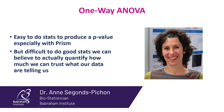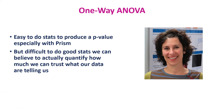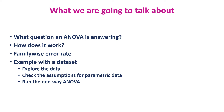Hello everyone! Today we are going to talk about the one-way ANOVA and what we need to think about when we run one. As I mentioned in the video about the student t-test, it is easy to do stats to produce a p-value, especially with PRISM, but it is difficult to do good stats — stats we can believe to actually quantify how much we can trust what the data are telling us. Here is what we are going to cover: what question an ANOVA is actually answering, how it works, important things to keep in mind, family-wise error rate, and finally we will run an ANOVA together.